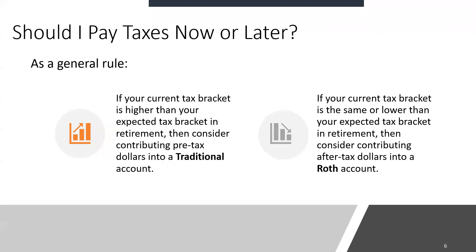The most common question I get is: which one should I choose? It really depends on whether you want to pay your taxes now or later. As a general rule of thumb, if your current tax bracket is higher than you expect it to be in retirement, consider pre-tax or traditional contributions. If your current tax bracket is the same or lower than you expect in retirement — maybe you're starting out your career — consider contributing after-tax dollars into a Roth account. Nobody knows what taxes will be in the future, so some personal assumptions need to go into this decision.